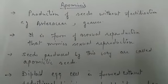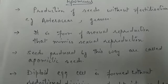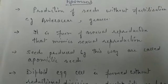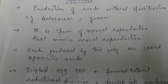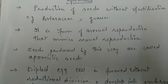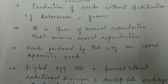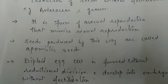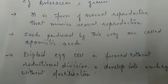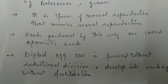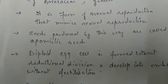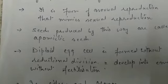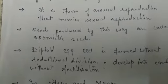Apomixis is basically a form of asexual reproduction, but it mimics sexual reproduction. So it is asexual, but it gives the impression of sexual reproduction occurring. The seeds produced by this way are called apomictic seeds.